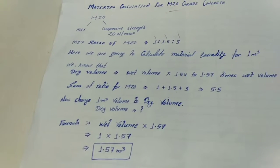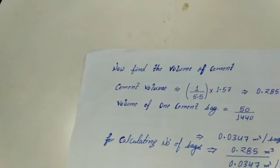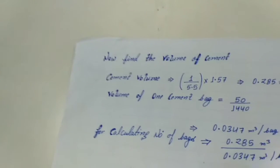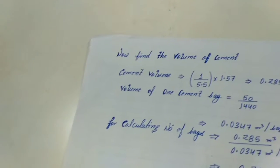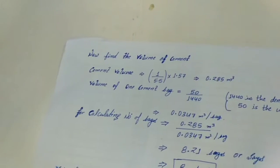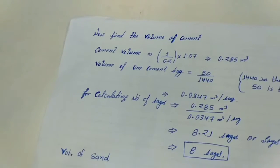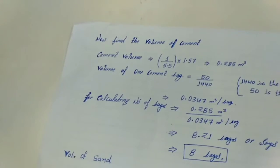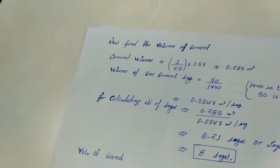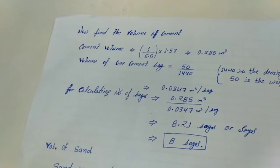Now we are going to calculate the quantity of cement. The volume of cement = (1 / 5.5) × 1.57, where 1 is taken from the mix ratio, 5.5 is the sum of ratios, and 1.57 is the dry volume. The volume of cement is 0.285 cubic metres.